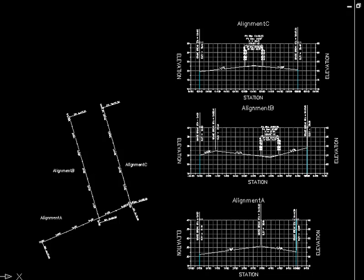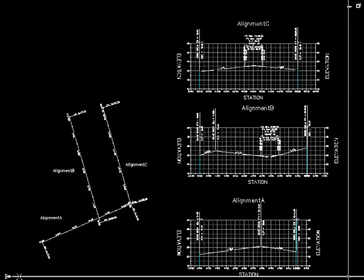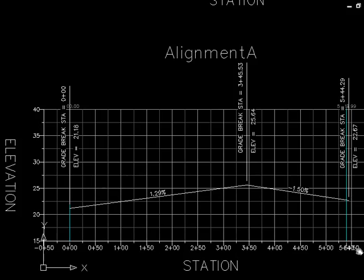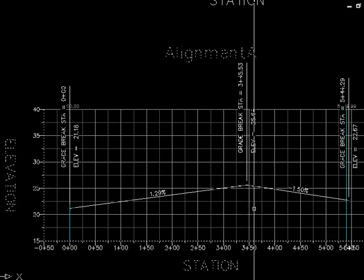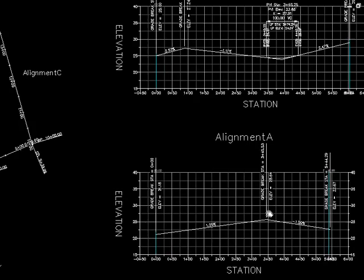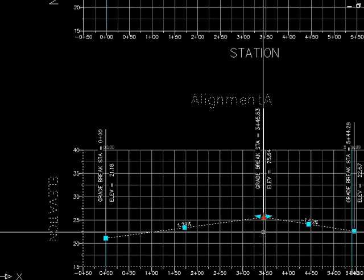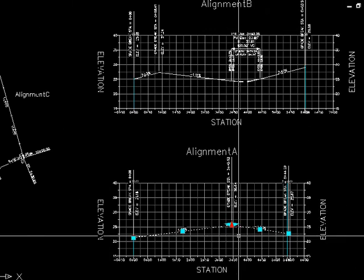To start, I'm going to go ahead and link the profile on alignment A to the profile on alignment B. So whenever we adjust the profile on alignment B, alignment A will adjust to match. I already have a PVI here where the intersection is — the intersection between alignment A and alignment B. So I'm just going to go ahead and link this to the profile.